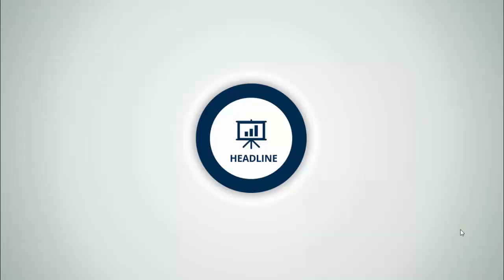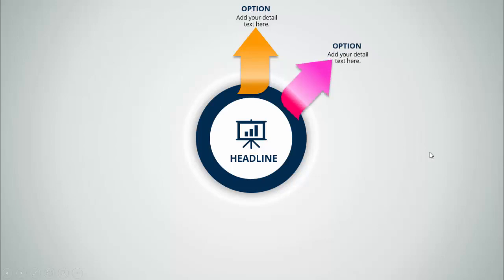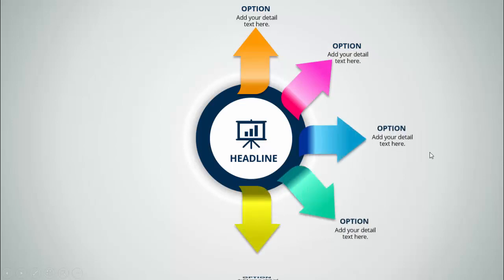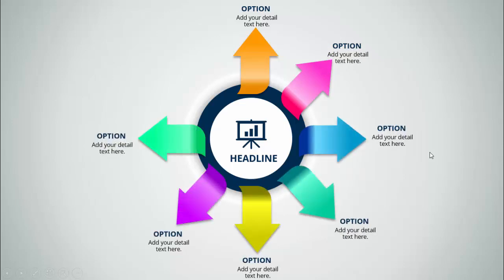In today's tutorial I'm going to show you a very creative eight-arrow options infographic slide in PowerPoint. This is how the slide works: when I click, the first arrow comes within this hole, you can see here, and then you've got the title and the detailed text. On my next click, the second arrow comes with different colors — I've used very bright and beautiful colors.